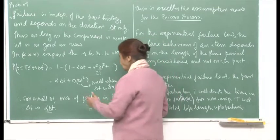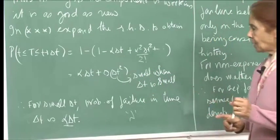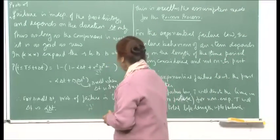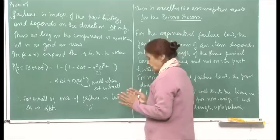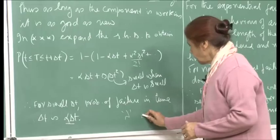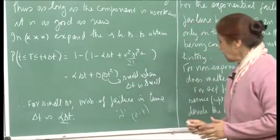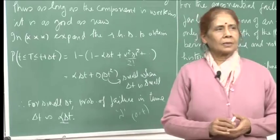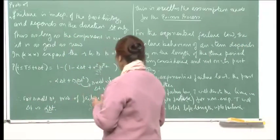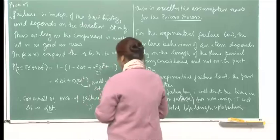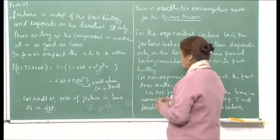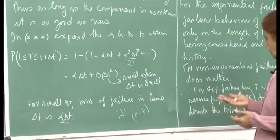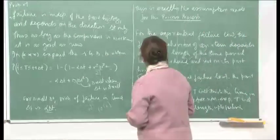With the assumption that components fail independently, plus the assumption that within a small interval the probability of failure is proportional to α delta T, we can say that if we consider time period 0 to T, then the number of failures within this interval will follow a Poisson process. The inter-arrival times would be exponential and the arrival pattern would be Poisson.